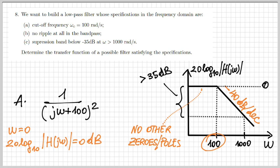If I choose the value in the band pass, I set ω equals zero and impose the value in the band pass. For example, I set 20 log₁₀ of |H(jω)| at ω=0 to 0 dB. If that's the case, then A has to be 100², so it has to be 10,000 or 10⁴. If I replace that, I've obtained the transfer function I was looking for.